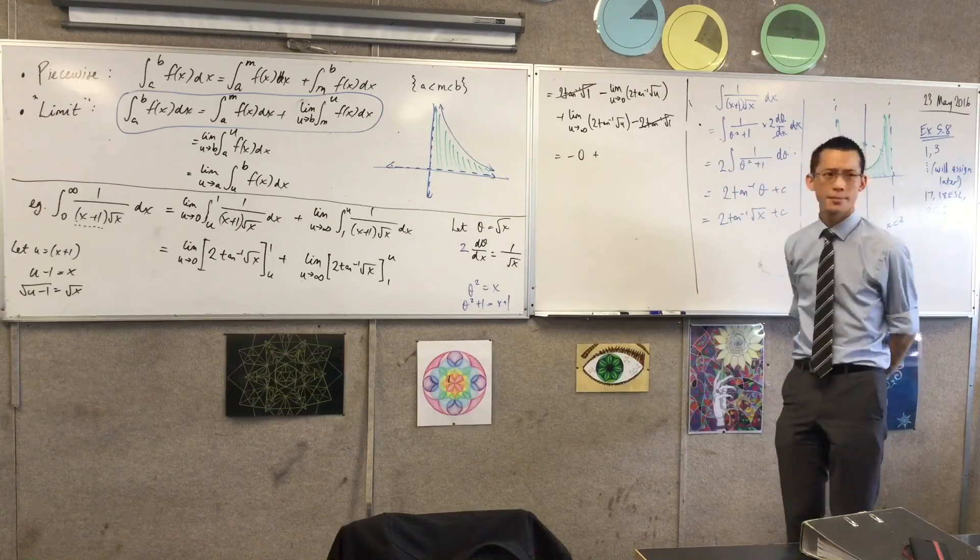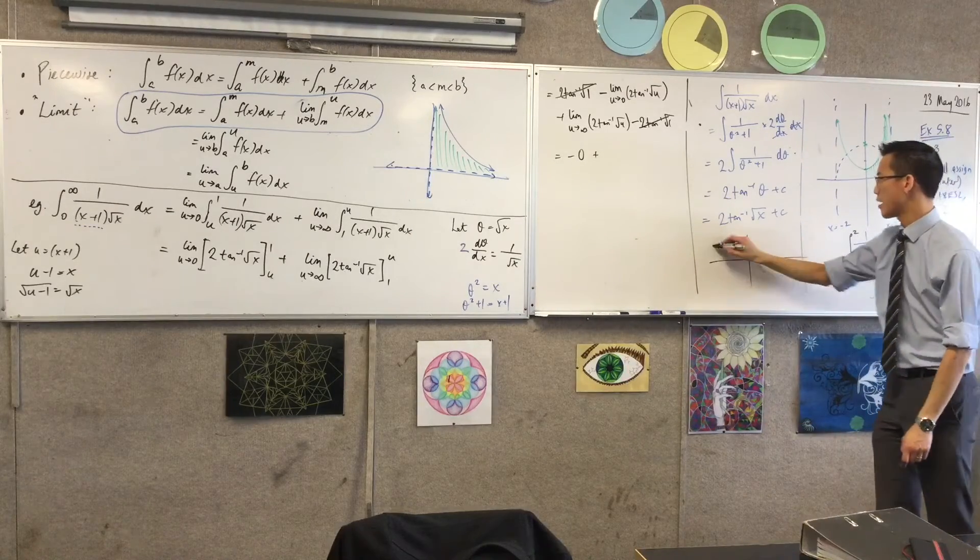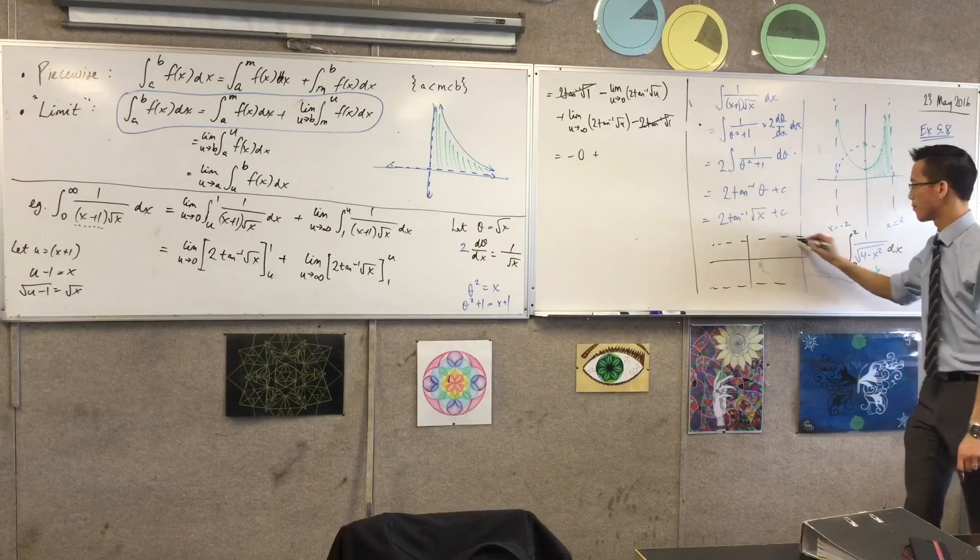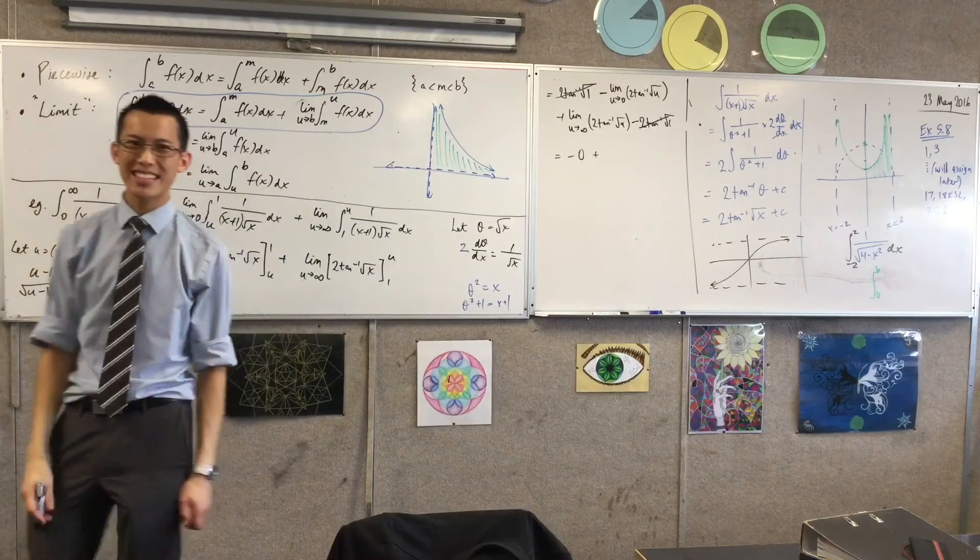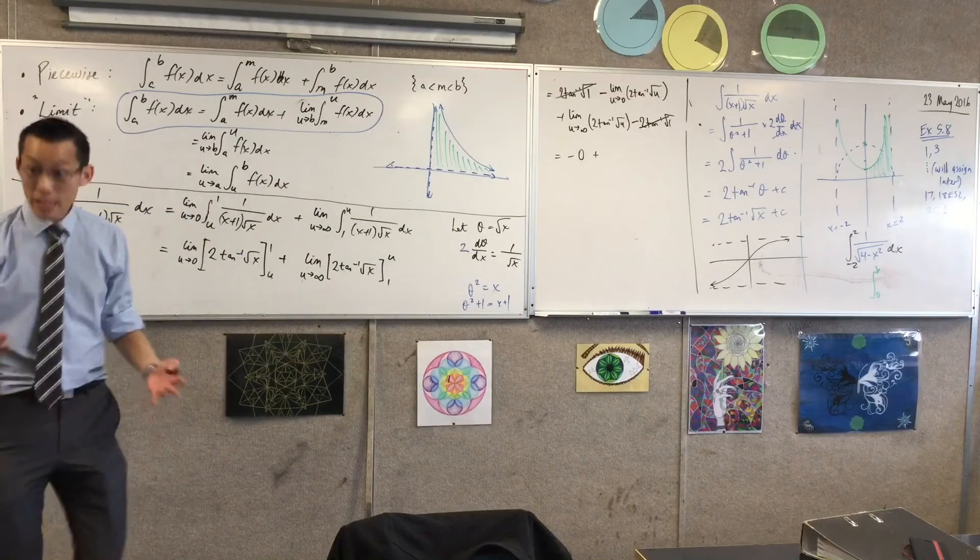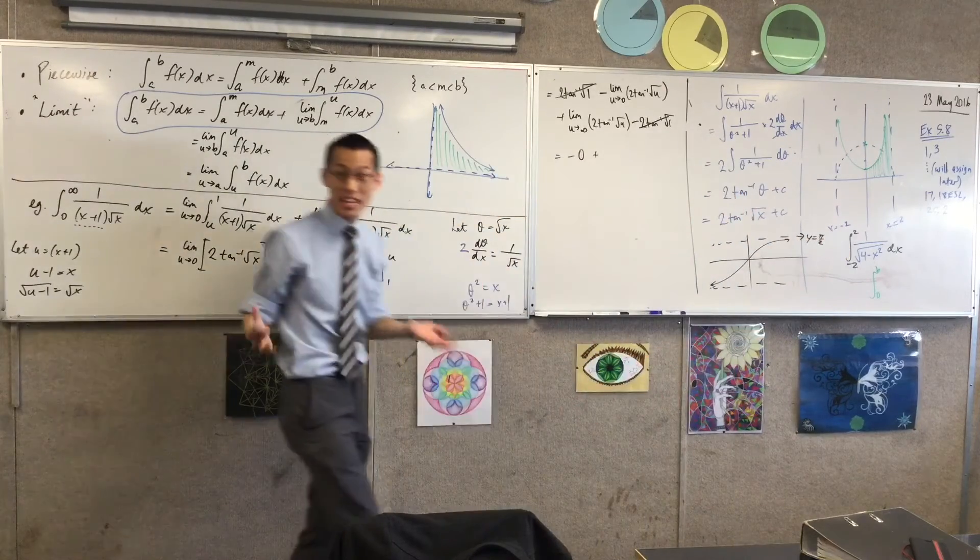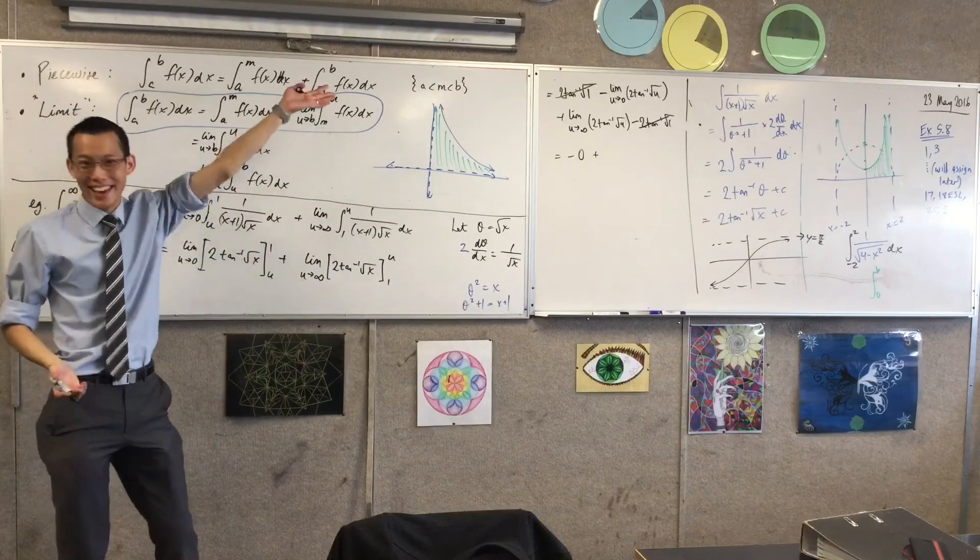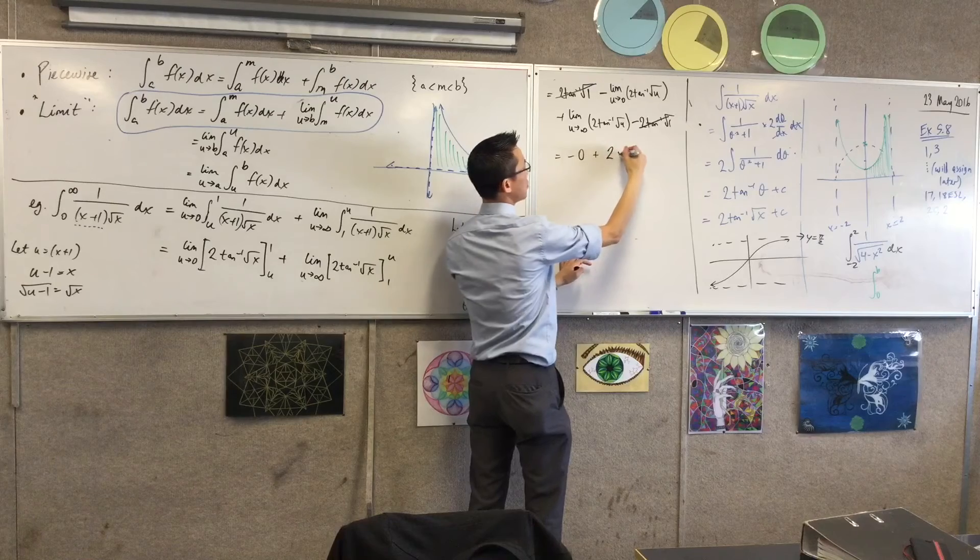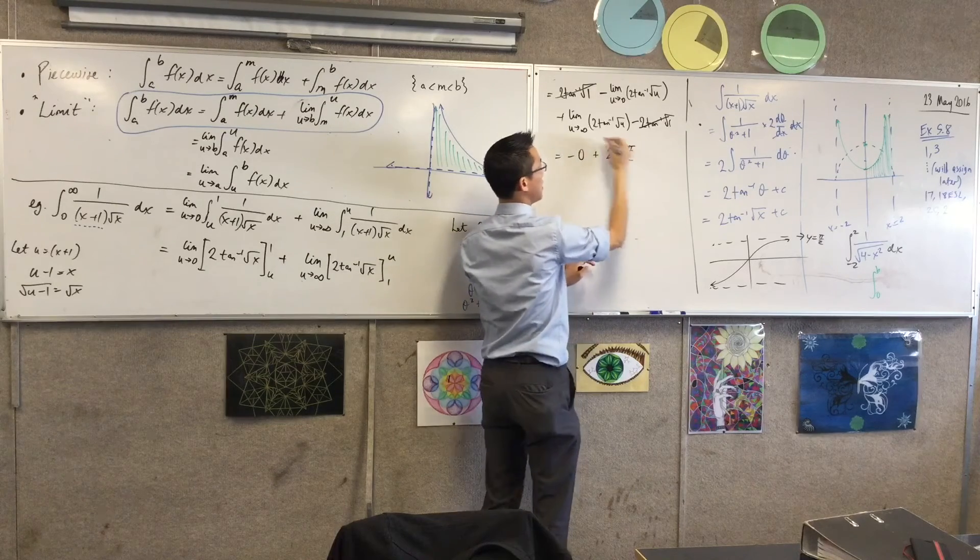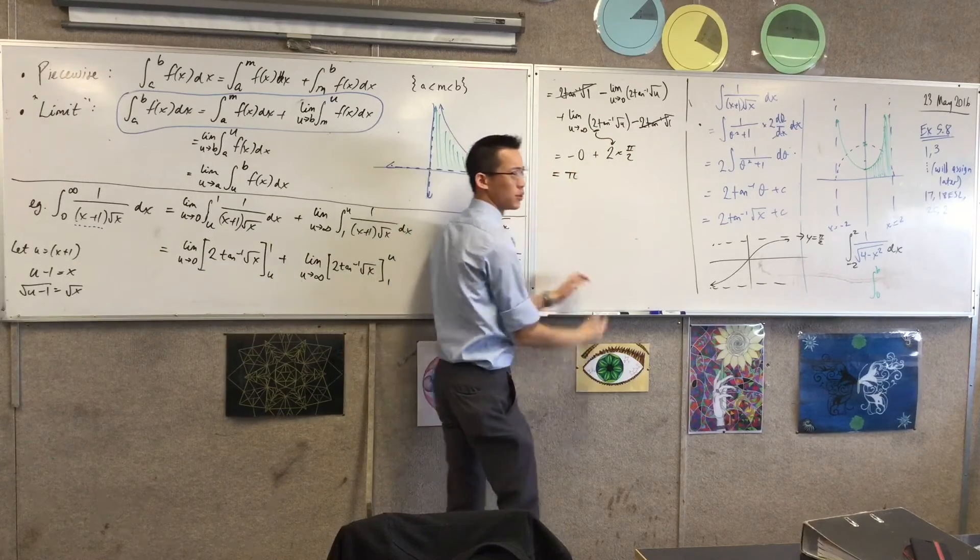So, what happens to this guy? What's happening as, here's the tan inverse graph. What happens to tan inverse as U approaches infinity? What's it getting to? It's going somewhere. It's going to pi on 2. That's what the equation of this asymptote is. Right? Now, it doesn't actually ever get there. But because I have a limit there, it kind of does. Right? So, I say, well, this is 2 times pi on 2.